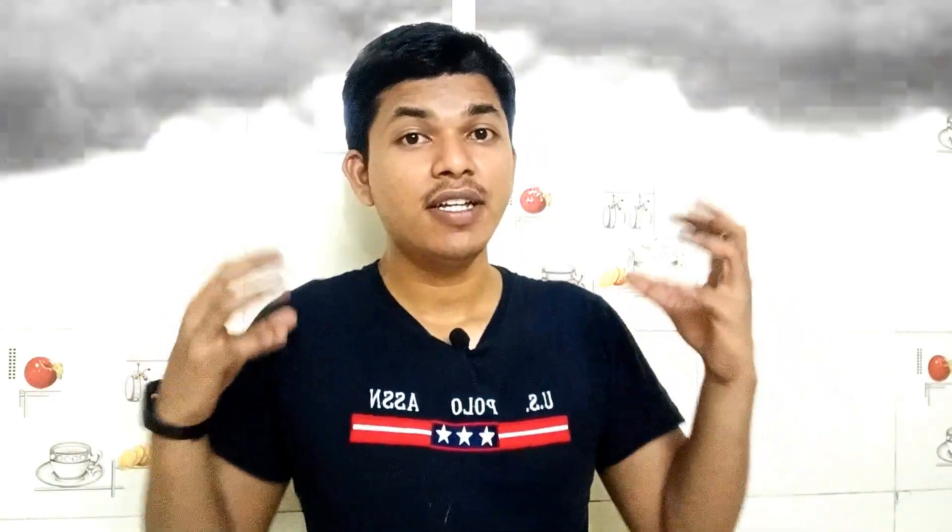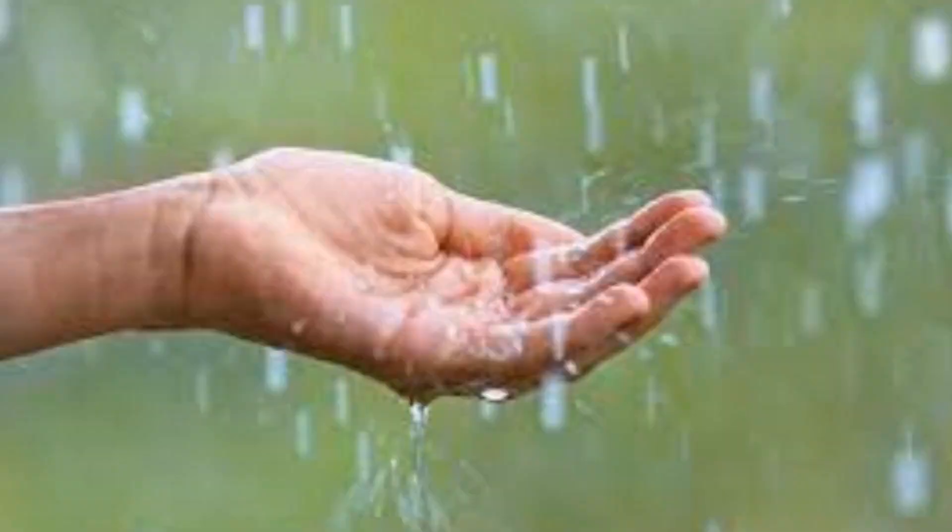This cloud will not fall as rain until condensation happens. Whenever cool air touches the clouds, the cloud becomes condensed and precipitates as rainfall. So trees help in this part — that is, providing cool air to the clouds.